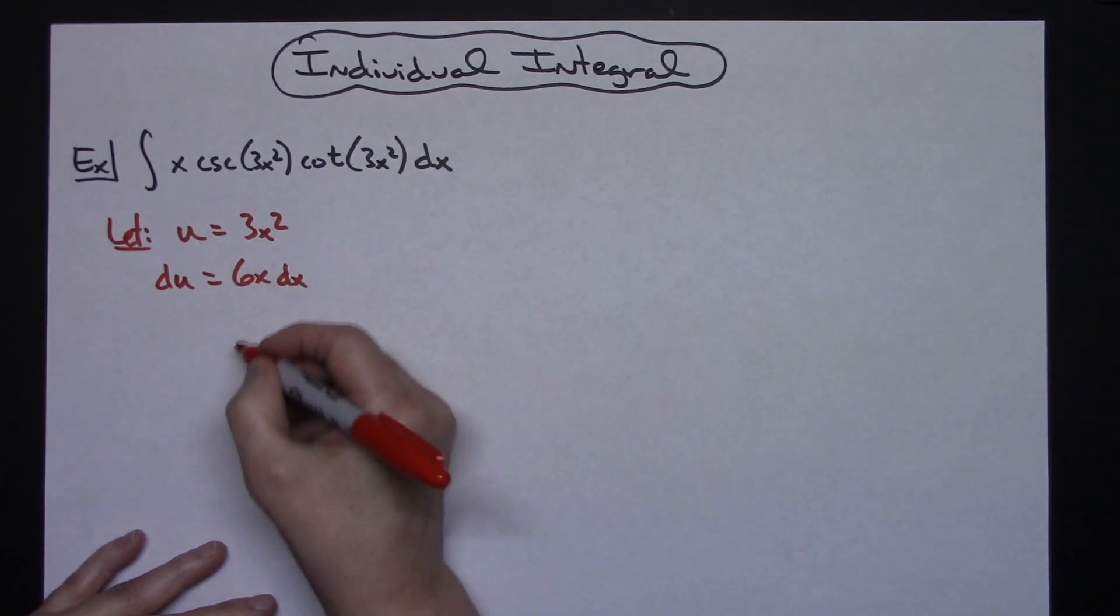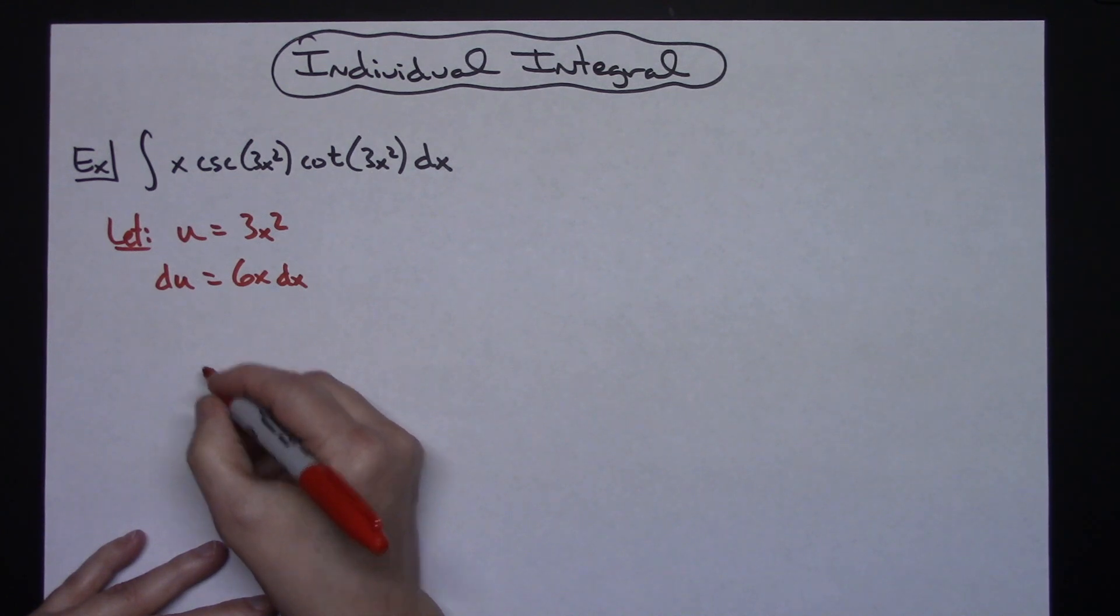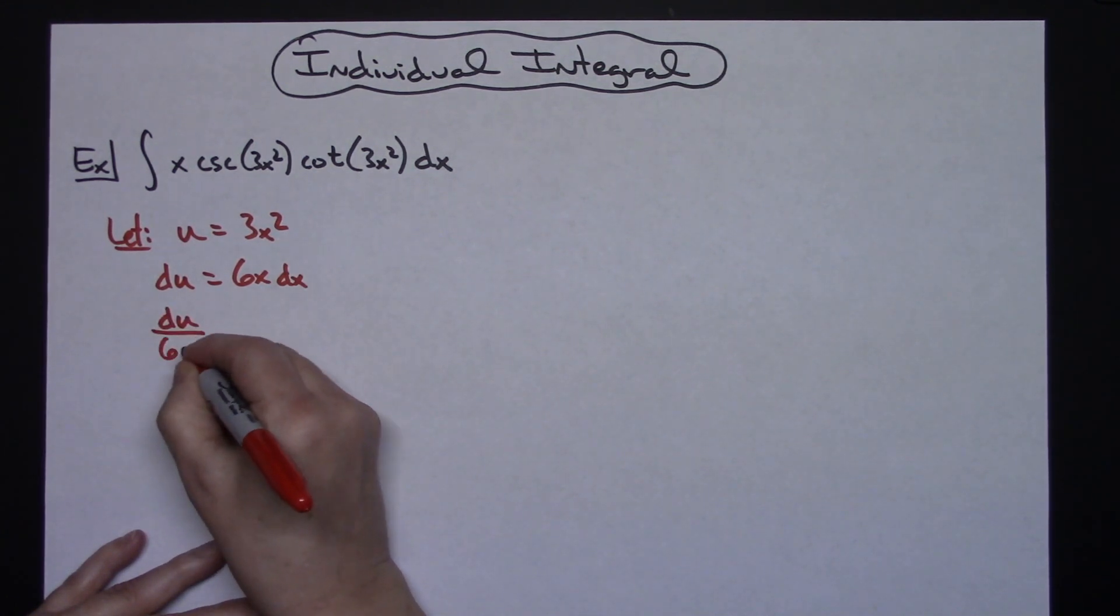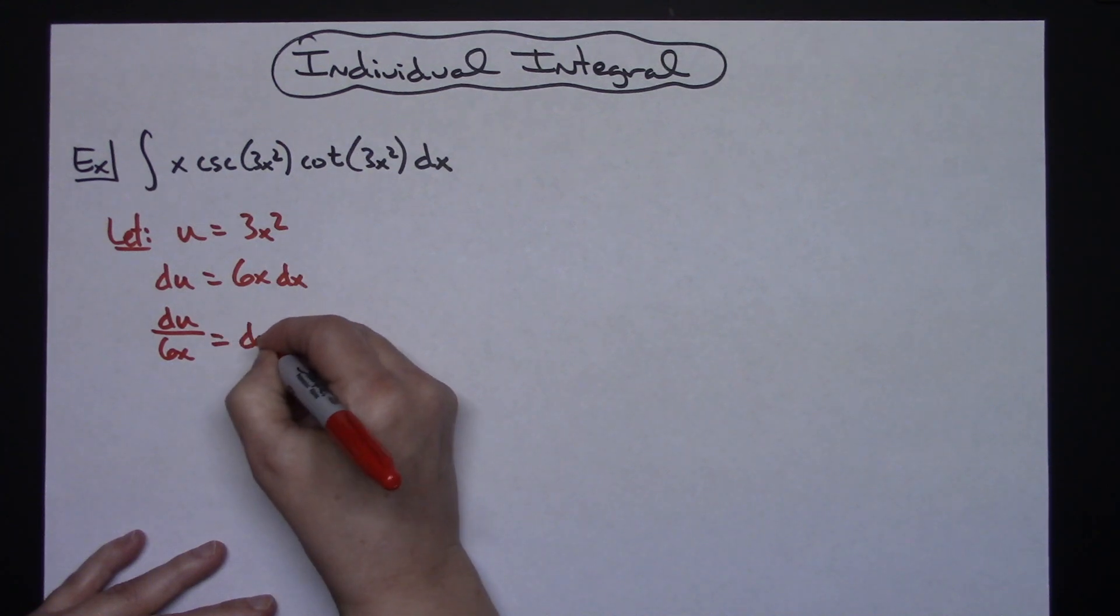Then I'm going to go ahead and solve all the way down for dx. I'm going to divide both sides by that 6x. So du over 6x is equal to our dx.